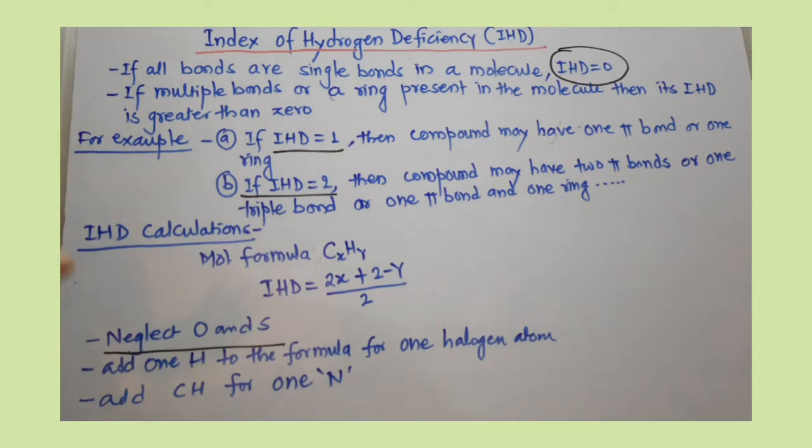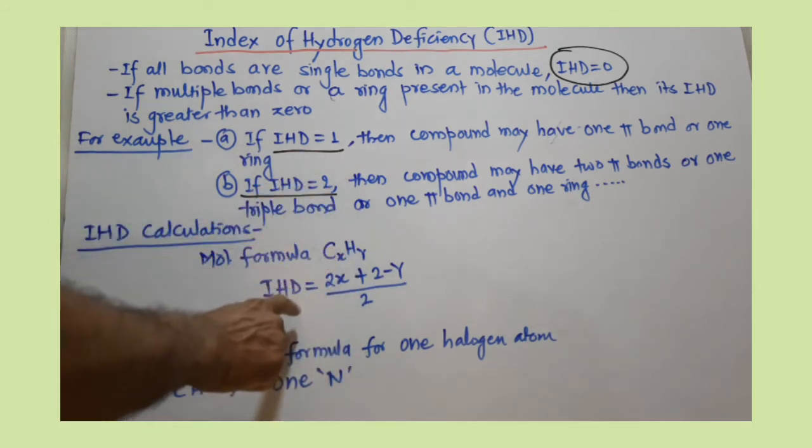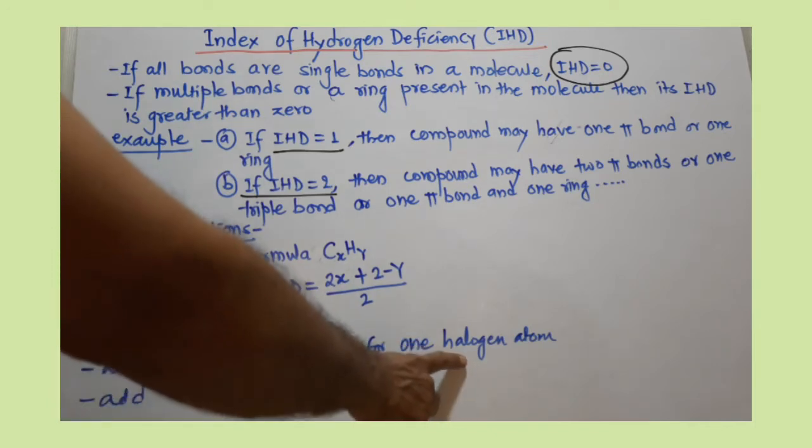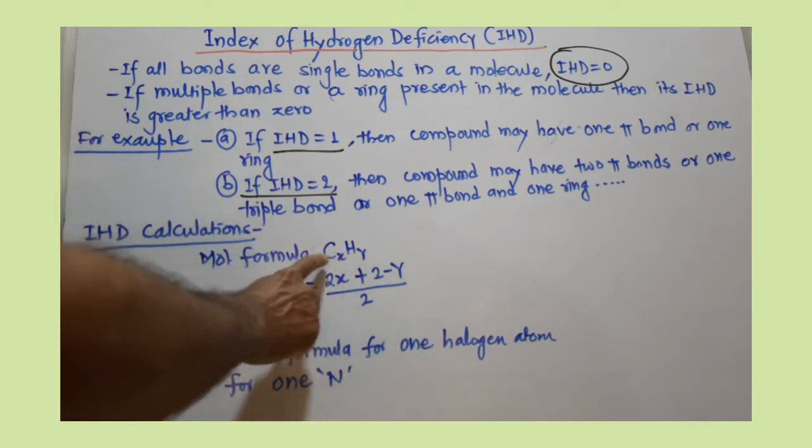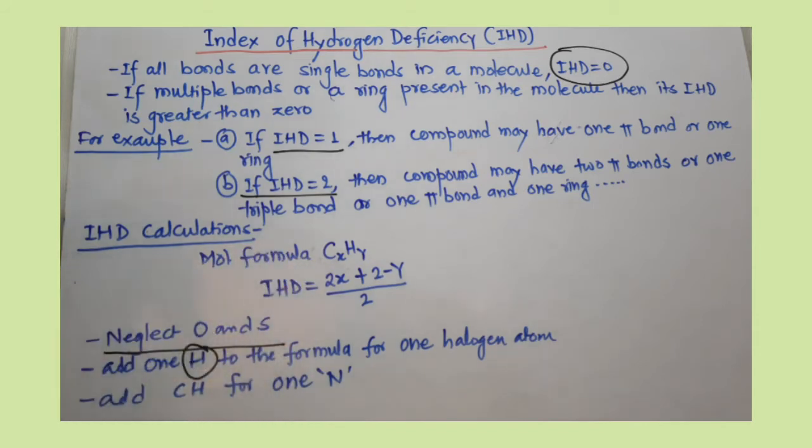For each halogen, you must consider it as a hydrogen. Suppose there are two halogens, you add two hydrogens in the formula before IHD calculation. If there is one halogen, you add one hydrogen in the molecular formula before the calculation of IHD.